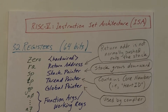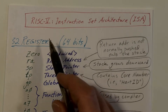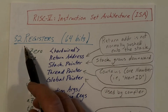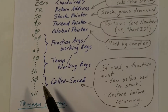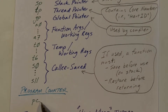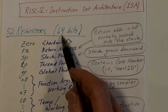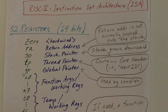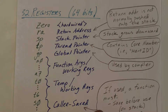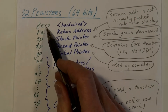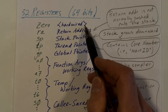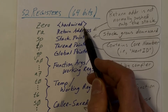Let's start with the registers. The RISC-V instruction set architecture has 32 general-purpose registers and a program counter, all of which are 64 bits. Here are the register names. We start with the first one, which is hardwired to be zero, so we won't need to save it when we do context switches between processes.